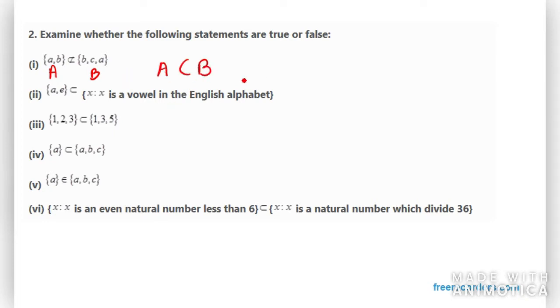Now the next one we have {a,e} is a subset of {x: x is a vowel in the English alphabet}. So in this case you can see again my set A is a subset of B because in set B we have all the vowels that is a, e, i, o, u. So we have all the vowels. So therefore we can say that A is a subset of B. So this is true. The first one is false.